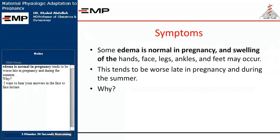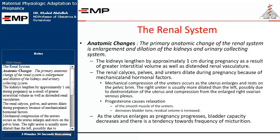The renal system: the primary anatomic change is enlargement and dilation of the kidneys and urinary collecting system. The kidneys lengthen by approximately 1 cm during pregnancy due to greater interstitial volume and distended renal vasculature. The renal calyces, pelves, and ureters dilate due to mechanical and hormonal factors. Mechanical compression of the ureters occurs as the uterus enlarges and rests on the pelvic brim. The right ureter is usually more dilated than the left, possibly due to dextrorotation of the uterus and compression from the enlarged right ovarian venous plexus. Progesterone causes relaxation of the smooth muscle of the ureters and decreases bladder tone. As the uterus enlarges, bladder capacity decreases and there is a tendency towards frequency of micturition.